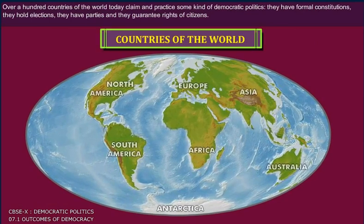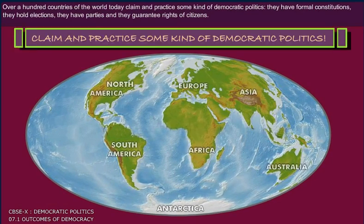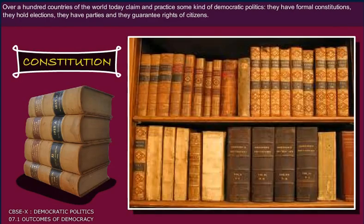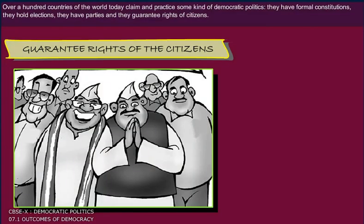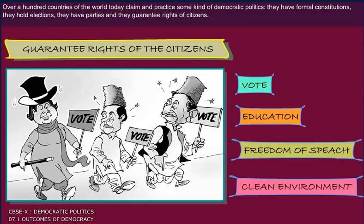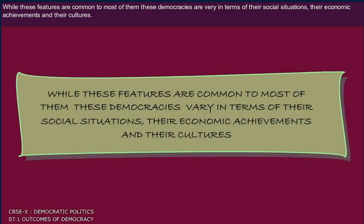Over a hundred countries of the world today claim and practice some kind of democratic politics. They have formal constitutions, they hold elections, they have parties and they guarantee rights of citizens. While these features are common to most of them, these democracies are very different in terms of their social situations, their economic achievements and their cultures.